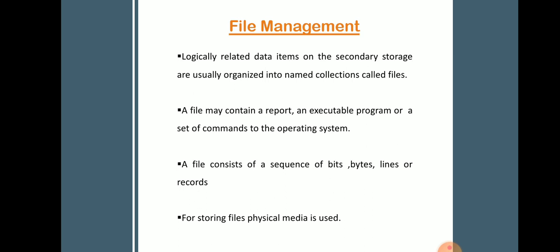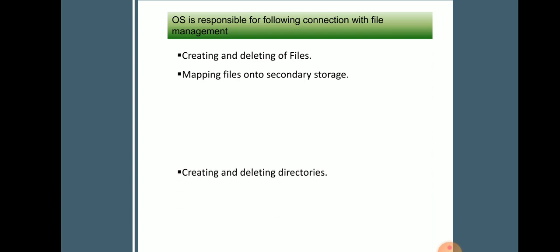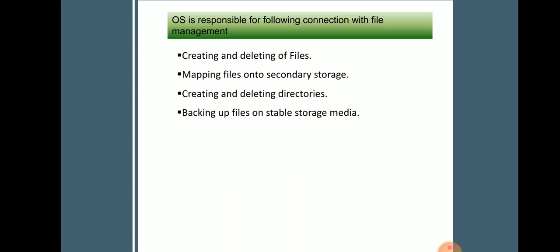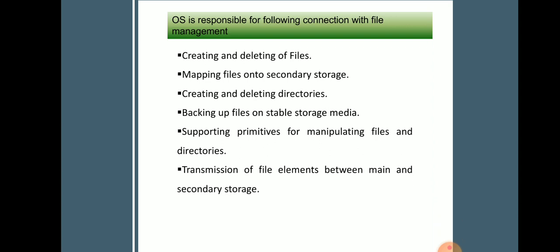The operating system is responsible for the following in connection with file management: creating and deleting files; mapping files onto secondary storage devices; creating and deleting directories; making backups of files on media; supporting primitives for manipulating files and directories; and managing transmission of file elements between main memory and secondary memory. The file management subsystem can be implemented on one or more layers of an operating system.